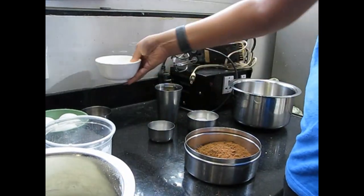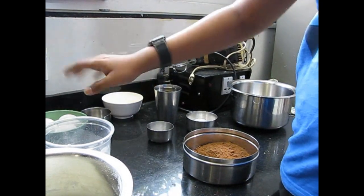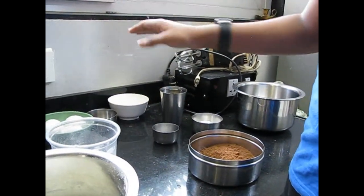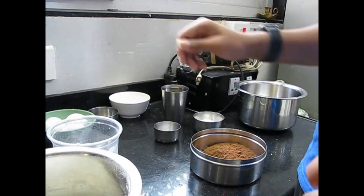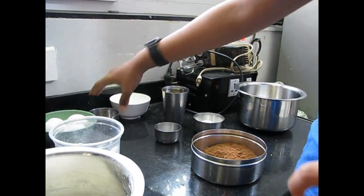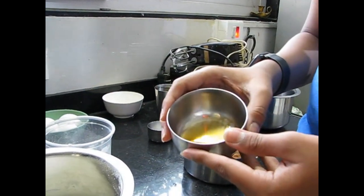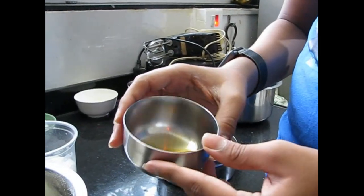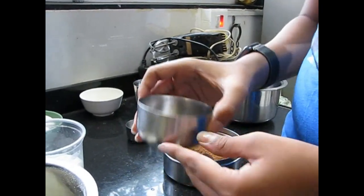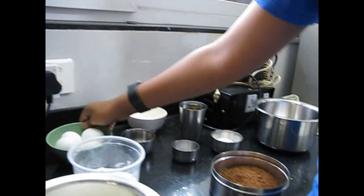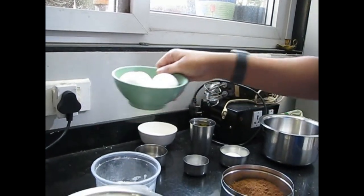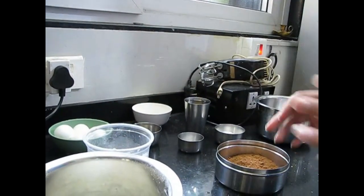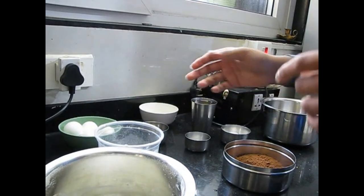If you want, it is not necessary, but we'll just add a little bit for enhancing taste. Here we have about 2 teaspoons of vanilla essence, and here we have 4 eggs. You can use half of all the ingredients if you have a smaller oven.